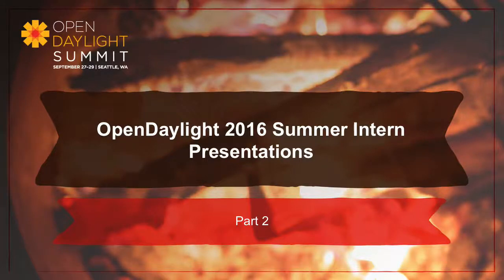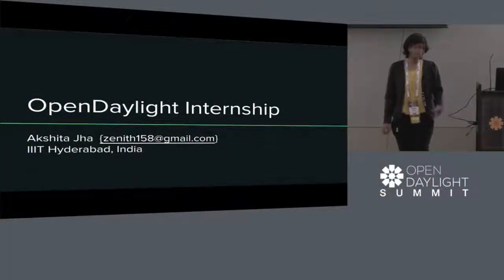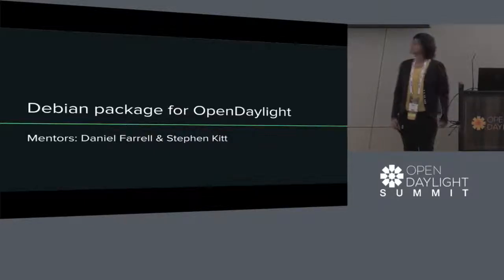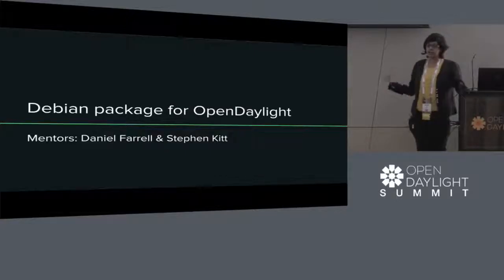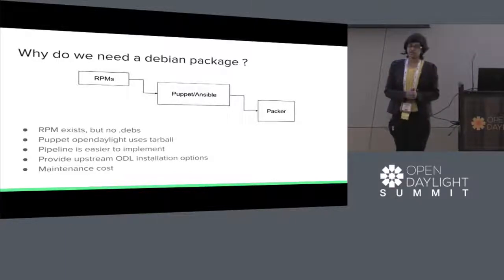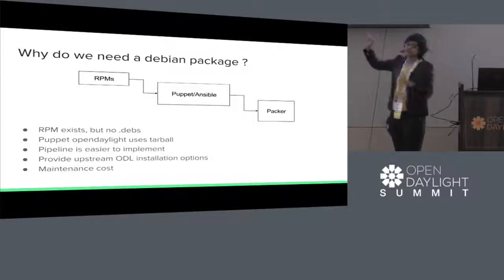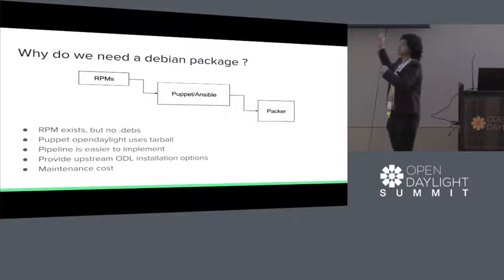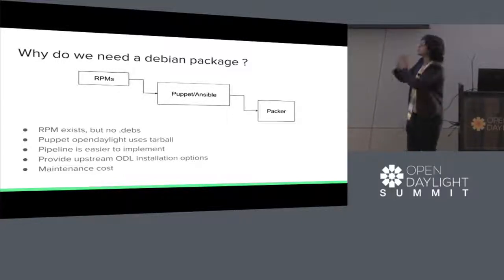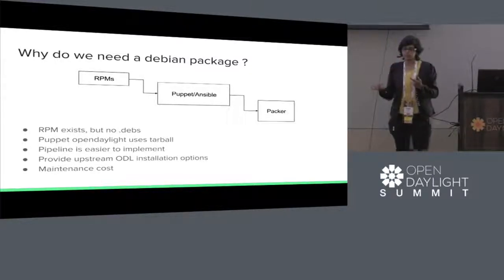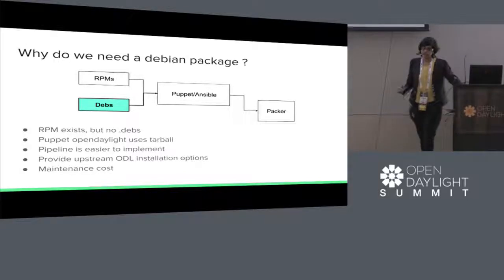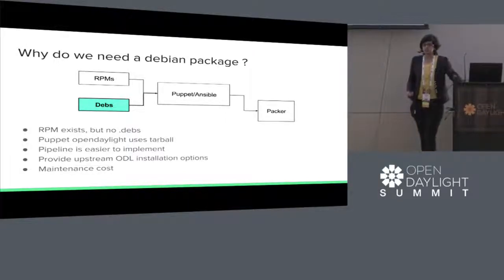Hello everyone. I'm Akshata Jha from IIIT Hyderabad — I was an OpenDaylight intern for the summer. I worked on creating the Debian package for OpenDaylight; my mentors were Daniel Farrell and Stephen Kitt. Why do we need Debian packages? For OpenDaylight, RPMs already exist. RPMs are consumed by Puppet and Ansible, which is then consumed by Packer like Vagrant Baseboxes and Docker containers. There's no such pipeline for .debs. Puppet OpenDaylight used a tarball for Ubuntu-like OSs. If we have .debs, it will follow a similar pipeline and be easier to maintain. ODL upstream will provide installation options, so it's always better to have it in the upstream.